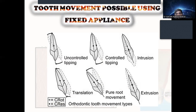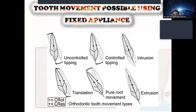We can use different types of tooth movements with fixed appliances. With removable appliances, we can only move teeth with a tipping movement. But with fixed appliances, we can achieve controlled tipping, intrusion, extrusion, translation, and rotation.